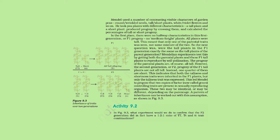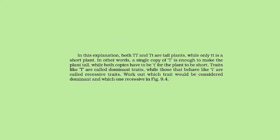These two copies may be identical or may be different, depending on the parentage. A pattern of inheritance can be worked out with this assumption, as shown in Figure 9.3. In this explanation, both TT and Tt are tall plants, while only tt is a short plant. In other words, a single copy of T is enough to make a tall plant, while both copies have to be t for the plant to be short. Traits like T are called dominant traits, while those that behave like small t are called recessive traits.